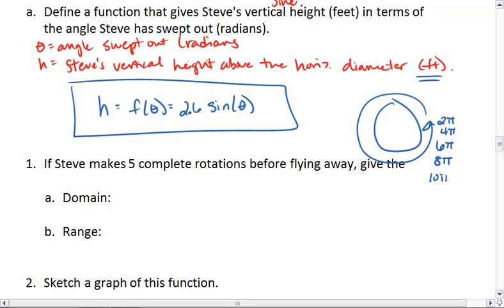5 is 10 pi. So our domain, which is all our possible values of theta, is anything from 0 to 10 pi. Or you can write this with an inequality notation of 0 less than or equal to theta less than or equal to 10 pi.